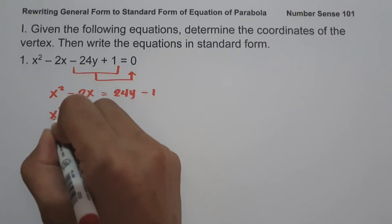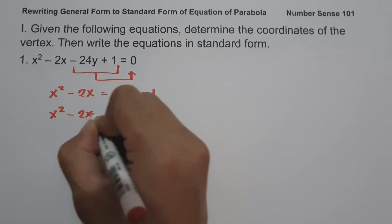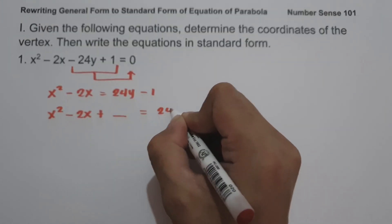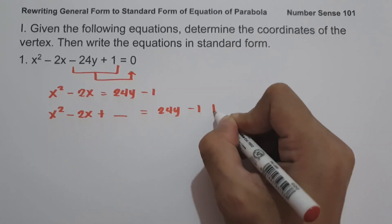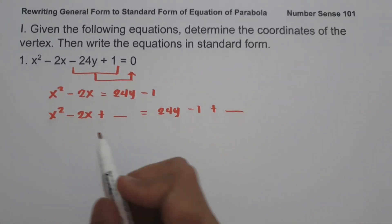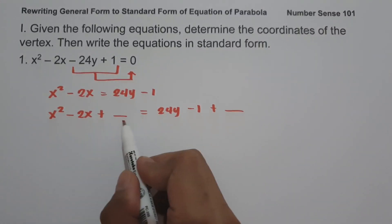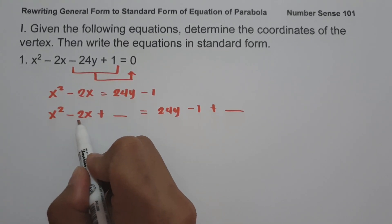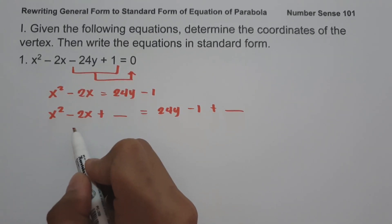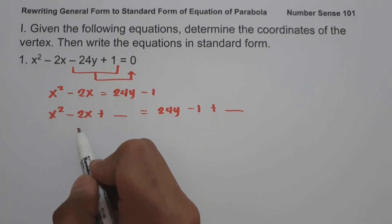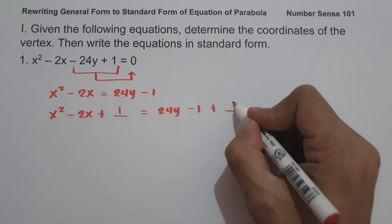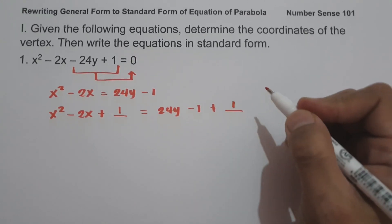We have x² - 2x + ___ = 24y - 1 + ___. So what must be the number to make this expression a perfect square trinomial? Let us divide -2 by 2, that is -1; -1 multiplied by itself is +1. So we are going to add 1 on both sides of the equation.